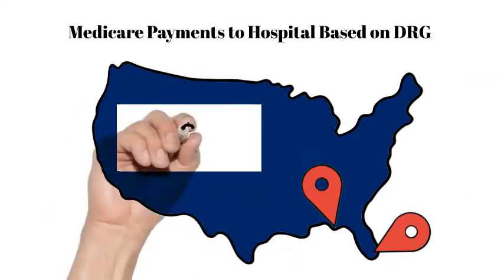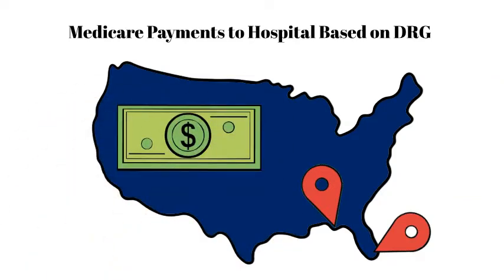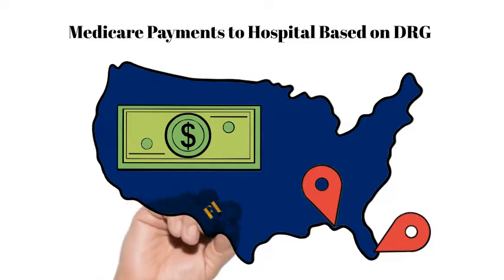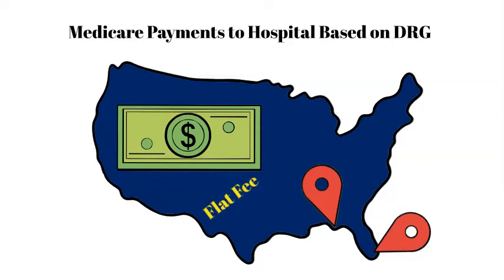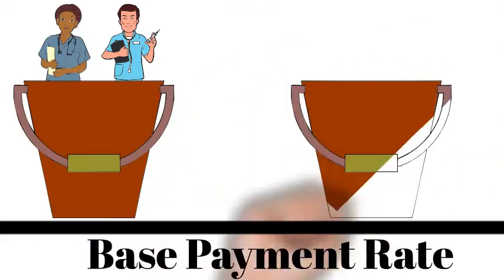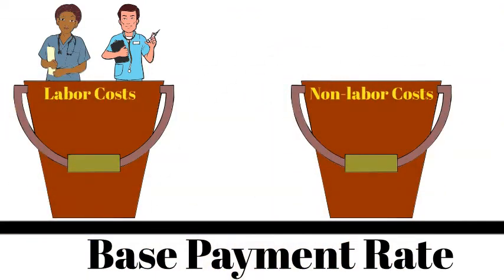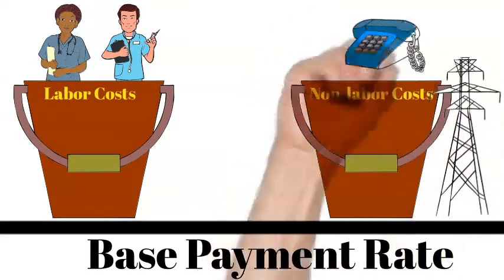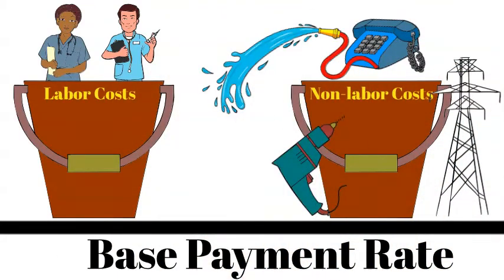The DRG reimbursement system does not consider actual costs incurred by a hospital for patient-related services. Hospitals are reimbursed a flat fee based on the assigned MSDRG regardless of the true cost of a patient's inpatient stay. Each hospital has a base payment rate consisting of two components: a labor portion and a non-labor portion. The labor portion is adjusted in each geographic area based on a wage index. The non-labor portion, covering expenses such as electricity, communications, water, maintenance, and other overhead outlays, varies by state according to a cost of living adjustment.